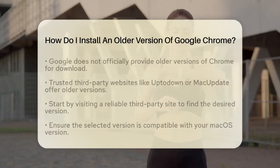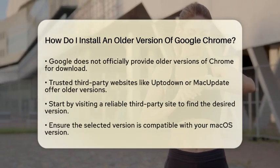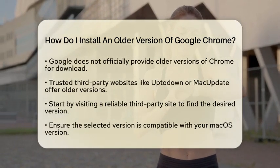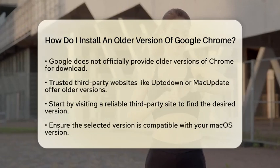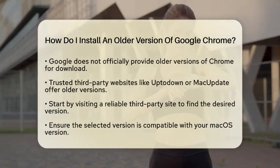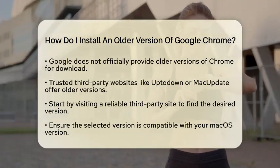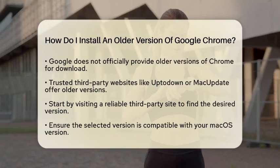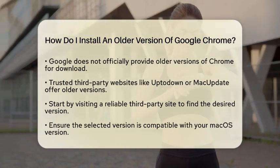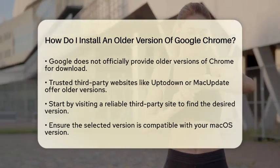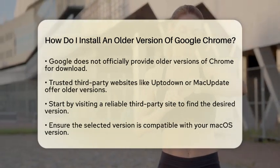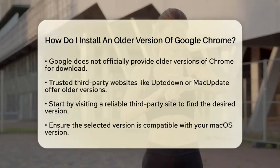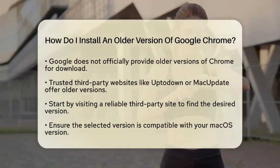Here is the catch: Google does not officially offer older versions of Chrome for download. But do not worry — you can find them on trusted third-party websites like UpToDown or MacHupdate. These sites host a variety of older versions that you can download safely.